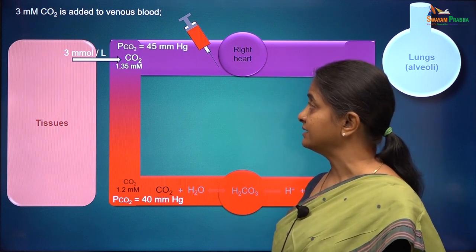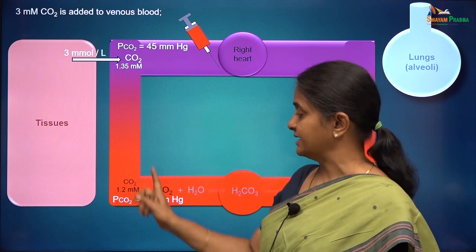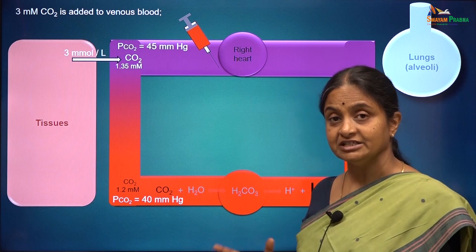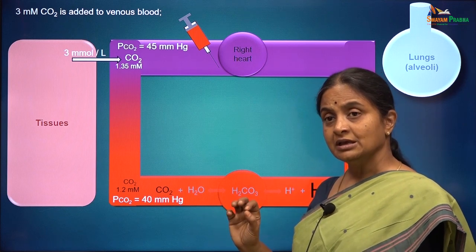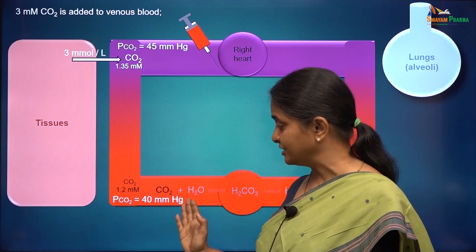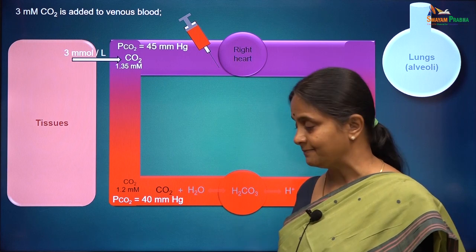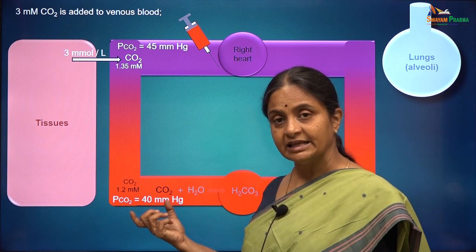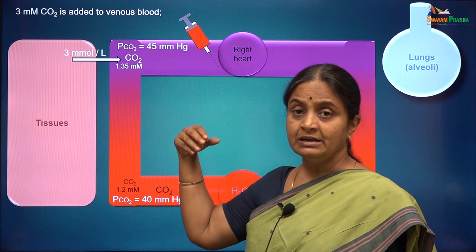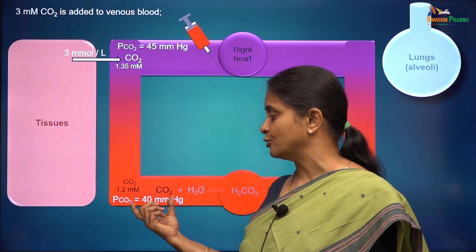Carbon dioxide concentrations are measured as partial pressures of carbon dioxide. The partial pressure of CO2 in arterial blood is 40 mmHg and in venous blood is 45 mmHg. For every millimetre mercury of partial pressure, 0.03 millimoles per litre will be dissolved in liquid. So for a PCO2 of 40 mmHg, we get 40 × 0.03 = 1.2 millimoles per litre carbon dioxide. The conversion factor is 0.03. If you have seen arterial blood gas reports — ABG reports — carbon dioxide concentrations are reported as PCO2.